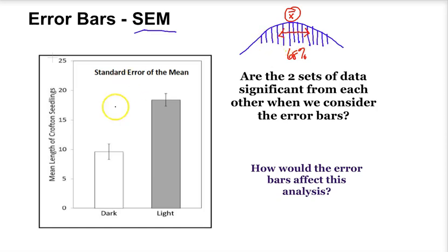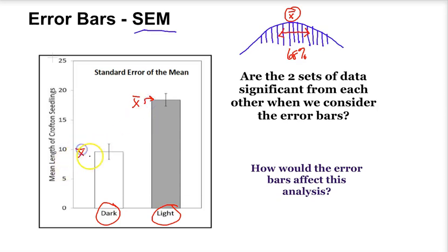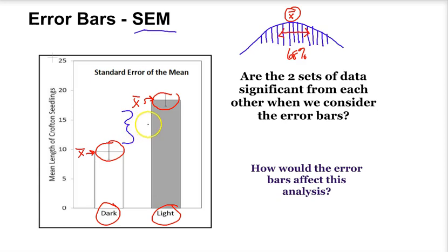These error bars that we see published in research data can help us understand whether or not two different experimental groups have significance. These error bars tell us something about the confidence of our mean. This could be the average of all the light seedlings, and this is the mean of all the dark. Because we have high confidence with very small standard errors of the mean, we can clearly see that there is a difference or a gap between the standard error bars, and we probably could say that there is some significant difference between these two groups.